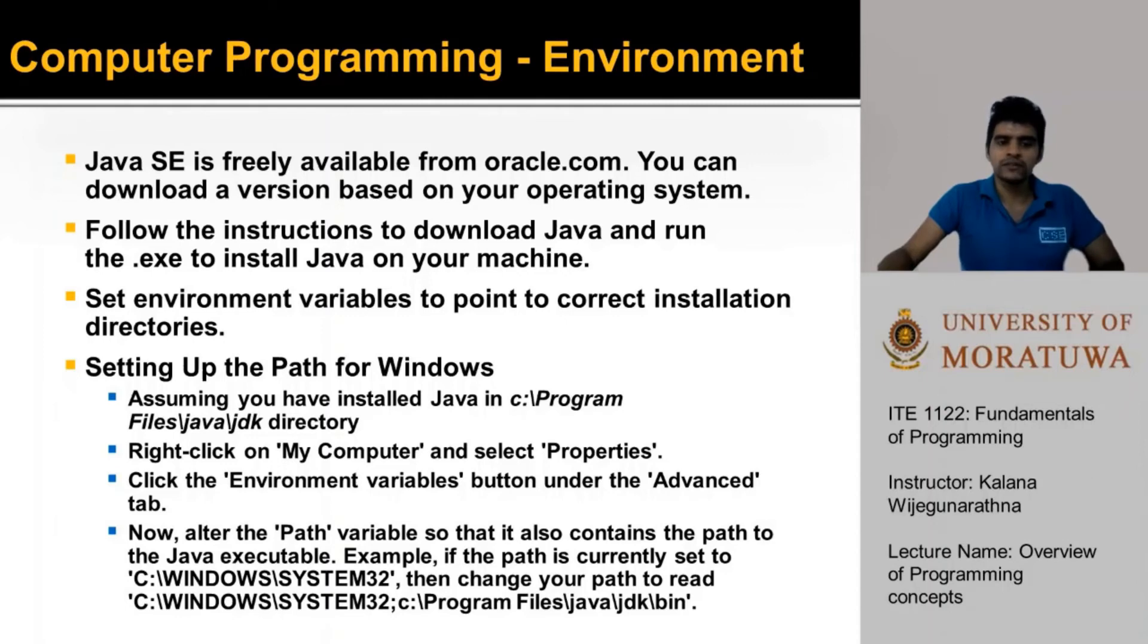The next step is to set the environment variables to point to the correct installation directories. Here is how you can set up the path in a Windows computer. Let's assume Java was installed at this directory. Now, right-click on My Computer and select Properties. Click on Environment Variables button under the Advanced tab. Alternatively, you can simply search for environment variables on your Windows search. Then edit the path variable so that it points to the Java executables. If your path currently only reads as C Windows System 32, then add the Java bin directory to it so that it will look as shown in the slides. Then your path will look as C Windows System 32, C Program Files, Java, JDK, and Bin, which is the folder where Java executables are located at.